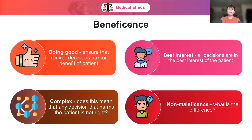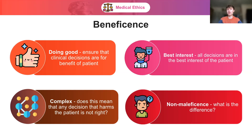Beneficence is about doing good — it ensures that all clinical decisions are made for the benefit and in the best interest of the patient. But beneficence is more complex than non-maleficence. For example, chemotherapy does good in the long term by increasing chances of remission, but it causes painful side effects in the short term. So beneficence raises the question: is short-term harm moral if it leads to long-term good? Beneficence is more useful for ranking decisions — given that treatments don't do harm, which one does the most good?